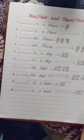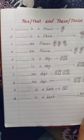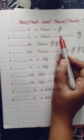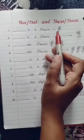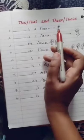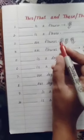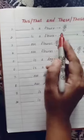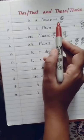The first example: blank is a flower. The flower is near. There is only one flower, so it is a singular noun. We have to use 'this' — this is a flower.